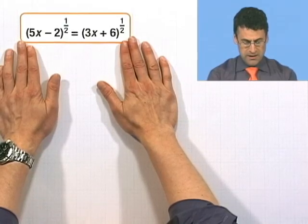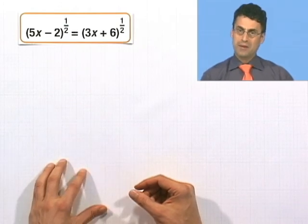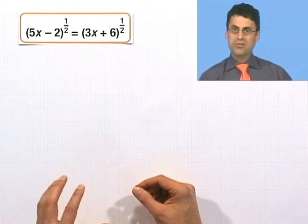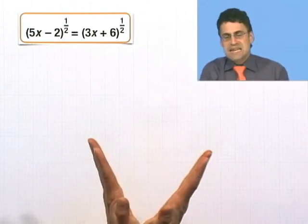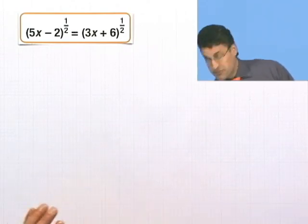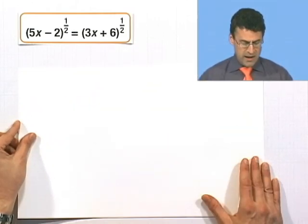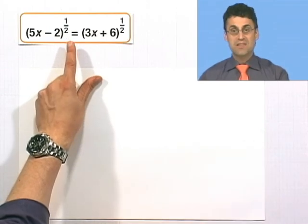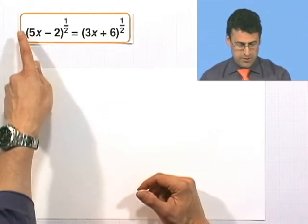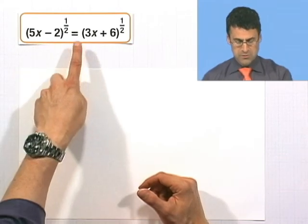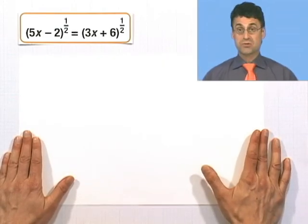Here's the first one: the quantity 5x minus 2, all raised to the 1/2 power, equals the quantity 3x plus 6 raised to the 1/2 power. What does this mean? A 1/2 in the exponent is the same thing as taking the square root. So one way to think about this is: the square root of 5x minus 2 equals the square root of 3x plus 6. Now I want to find solutions.